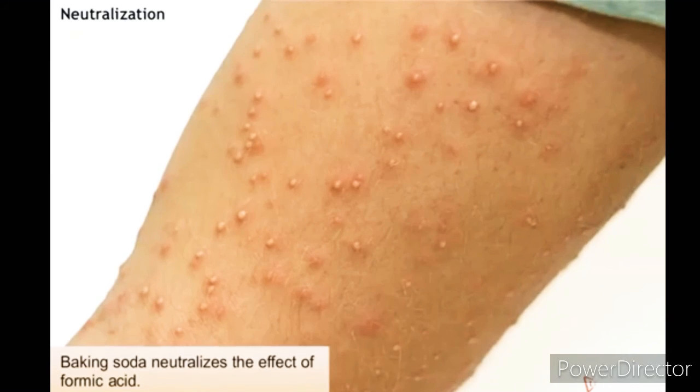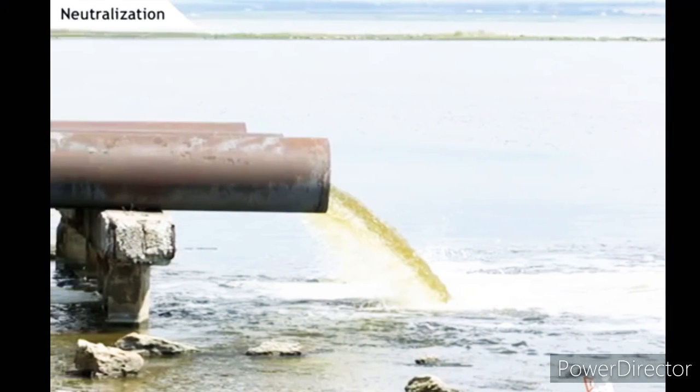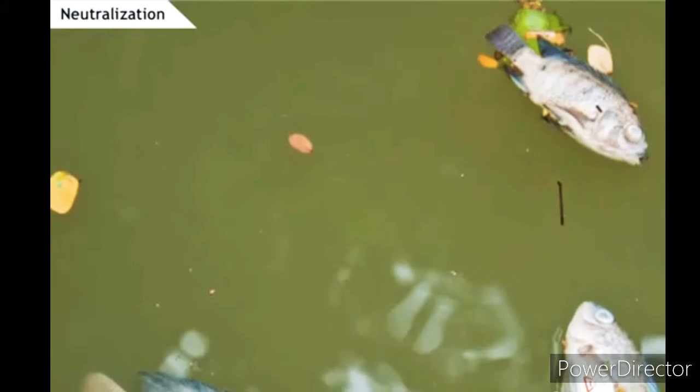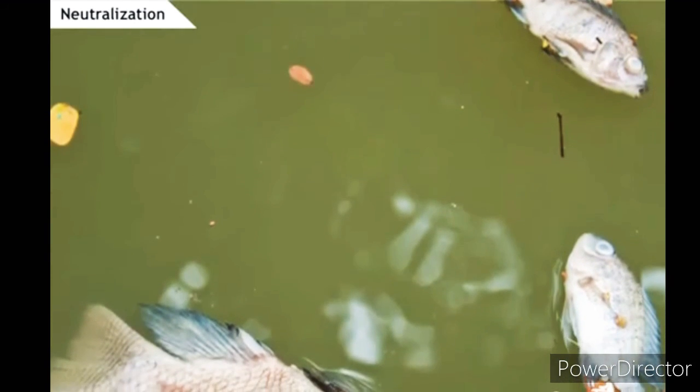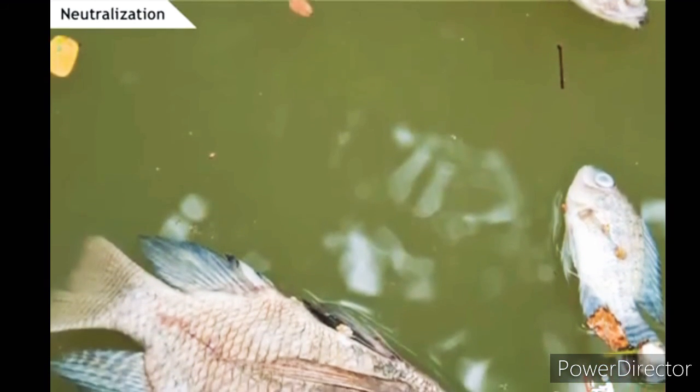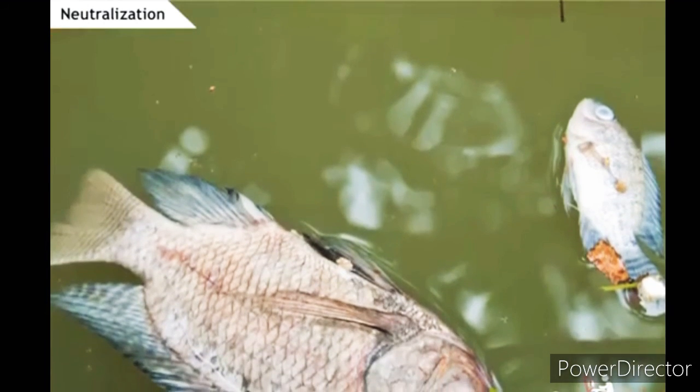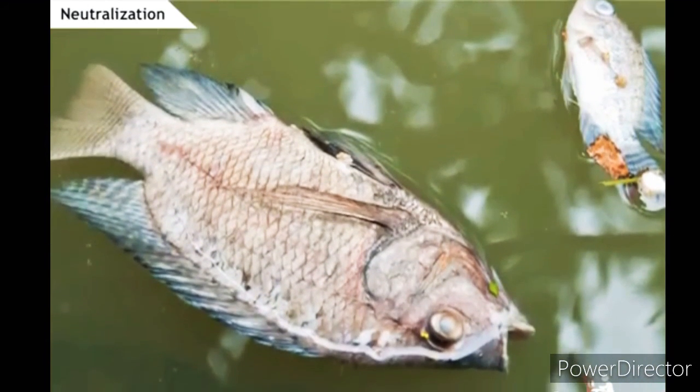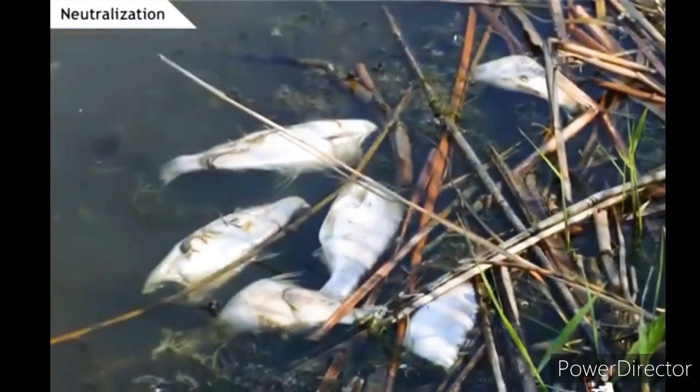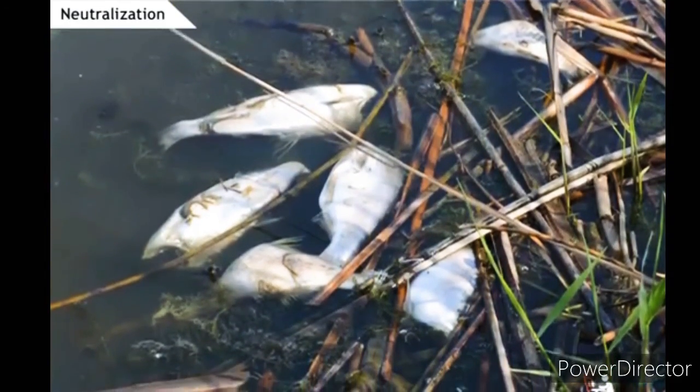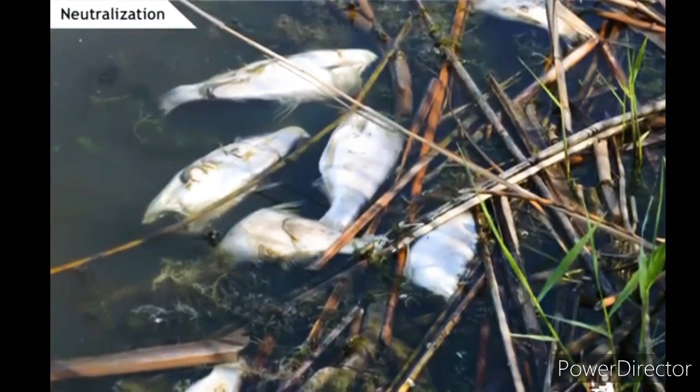Now, let us know about factory waste. The waste from many factories contains acids. If they are allowed to flow into water bodies, the acids will kill fish and other microorganisms. Hence, factory waste should be treated with basic substances to neutralize the acidic nature.